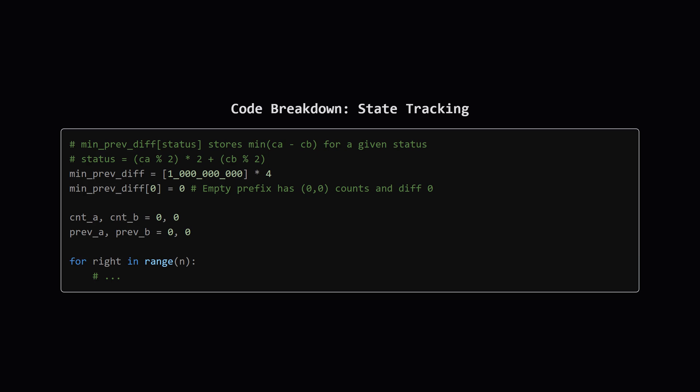Inside the loop for a specific pair of characters, we initialize our tools. The most important one is an array to keep track of our states. We can call it min previous diff. This array will store the best value, specifically the smallest count of A minus count of B, that we've seen for each of the four parity states. We initialize it with very large numbers, but, for the state corresponding to even even, we set its value to 0. This represents the empty prefix before the string even starts, where both counts are 0, and the difference is 0. We also have counters for our A and B characters, and then we begin our main loop, scanning through the string with a right pointer.